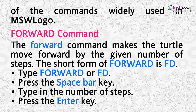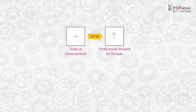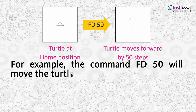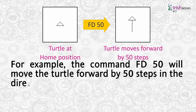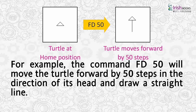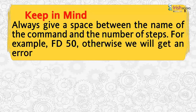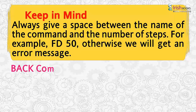The forward command makes the turtle move forward by the given number of steps. The short form of forward is FD. To use it, type FD, press the spacebar key, type the number of steps, and press the Enter key. For example, the command FD 50 will move the turtle forward by 50 steps in the direction of its head and draw a straight line. Always give a space between the name of the command and the number of steps.